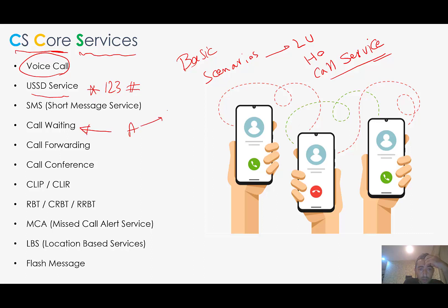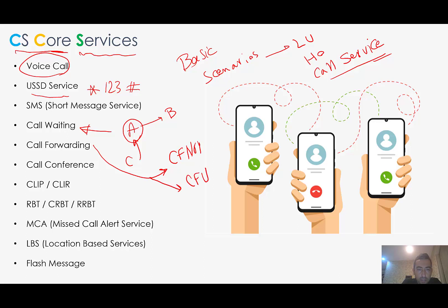When A is talking to B and C is calling A, if A has activated the call waiting service, A will hear the call waiting announcement. Call forwarding: we have several types. Call Forwarding Not Reachable means that if the B number is not reachable, the call is forwarded to C. Call Forwarding Unconditional means that in any condition when you call A, it will forward to C.